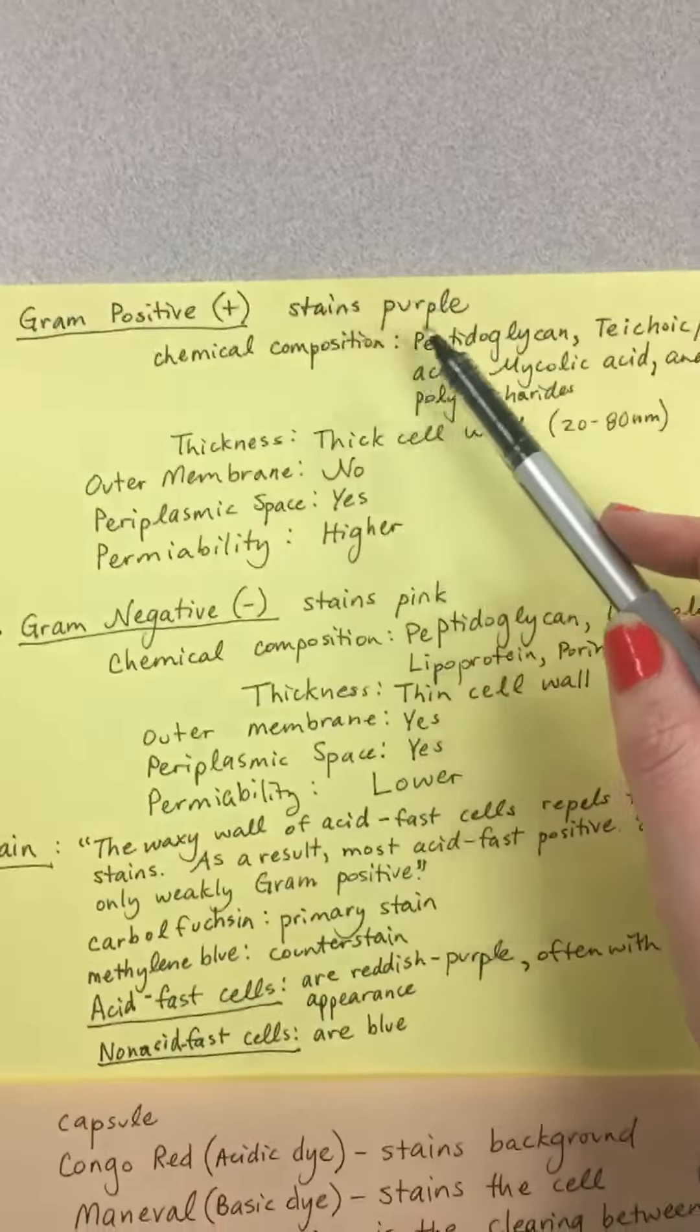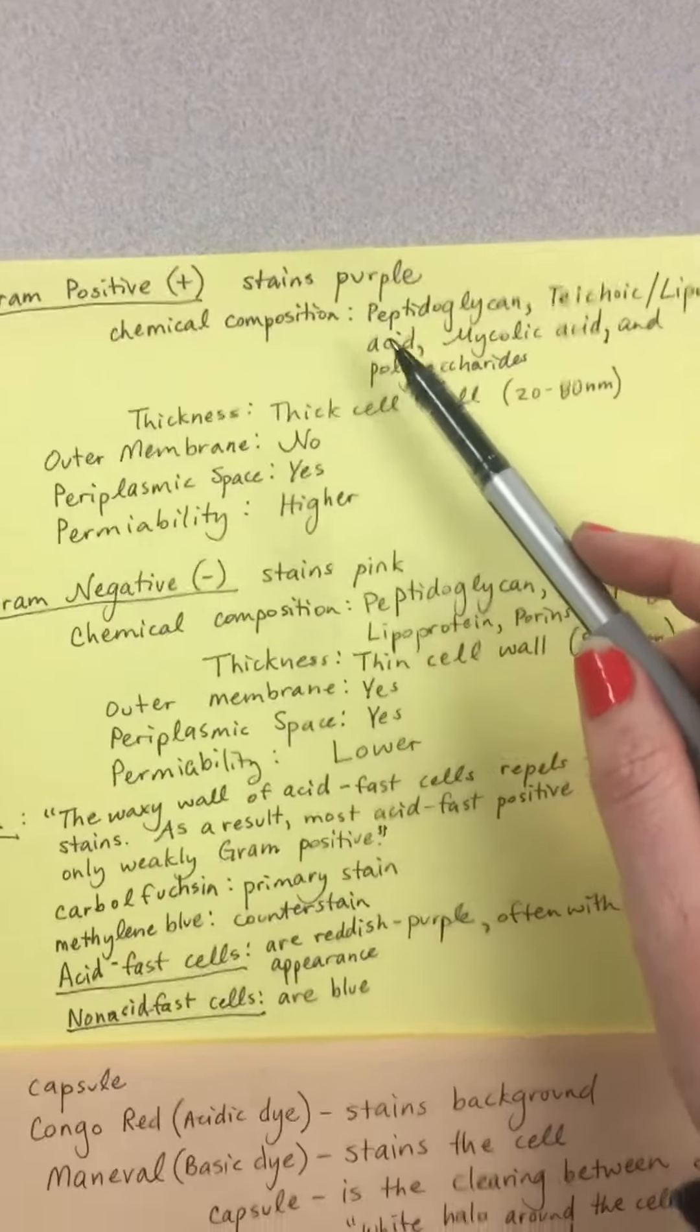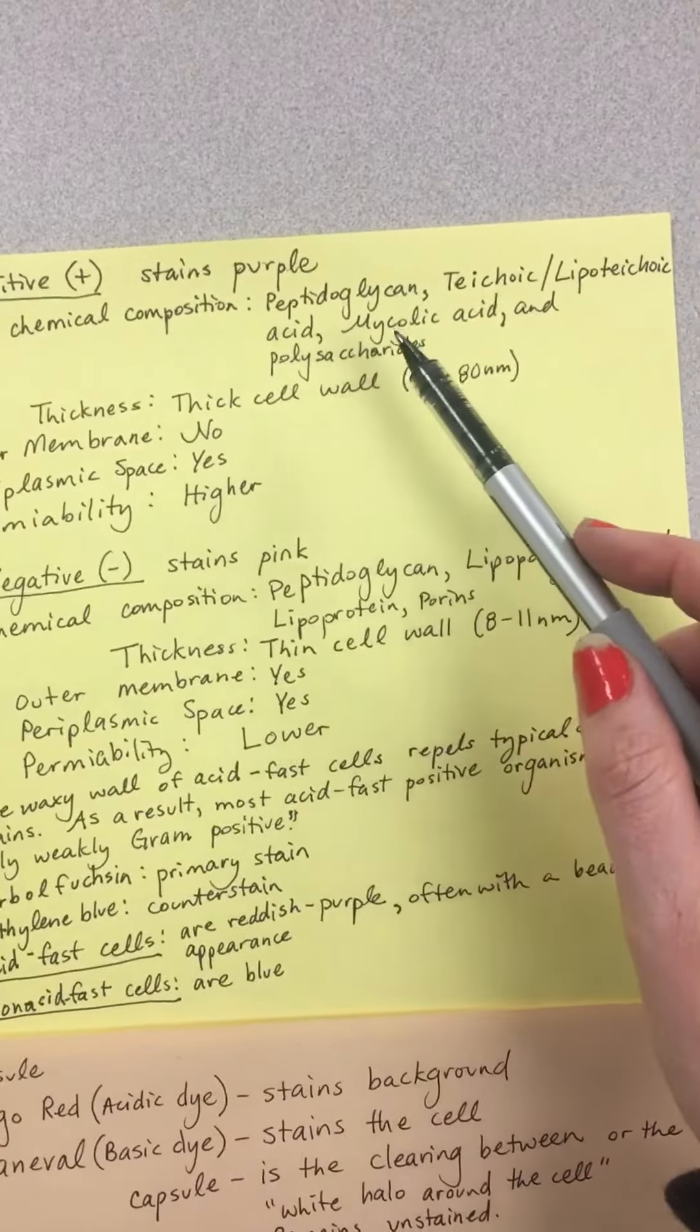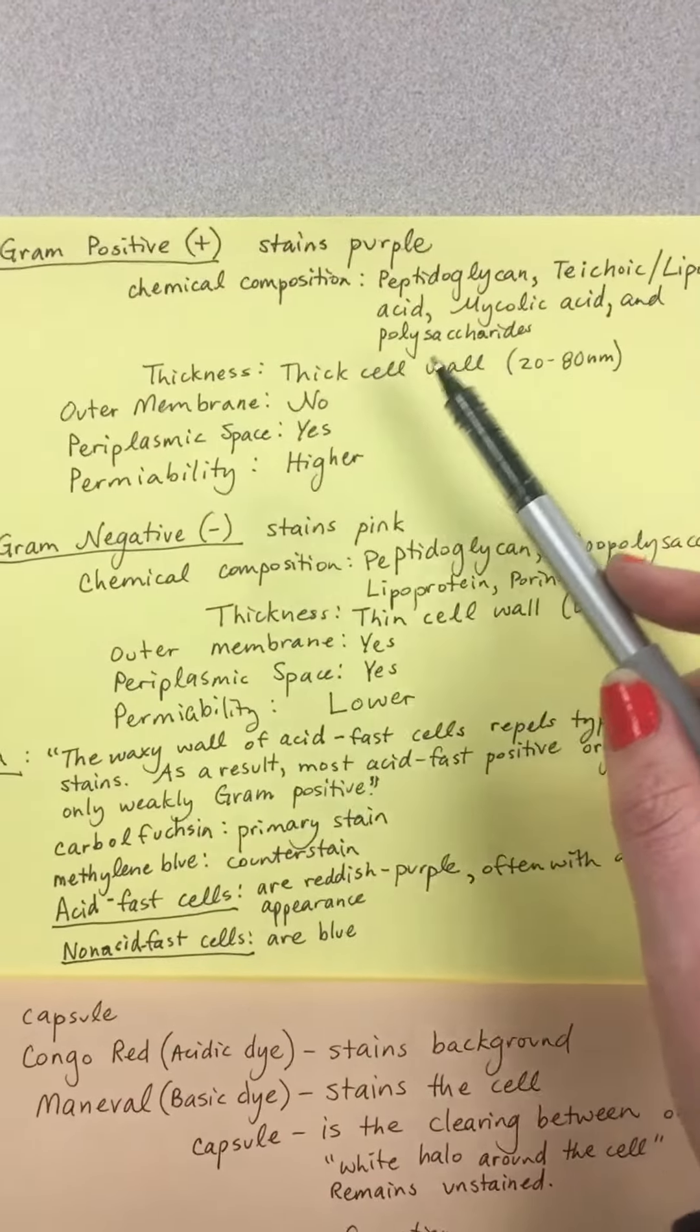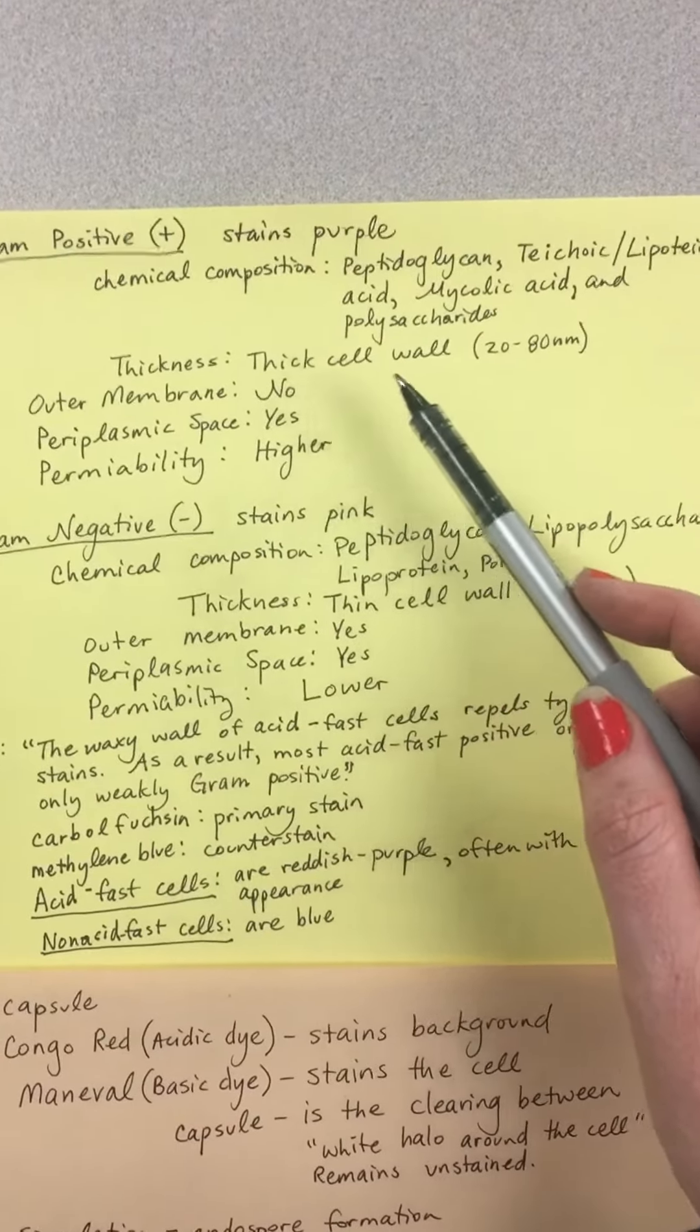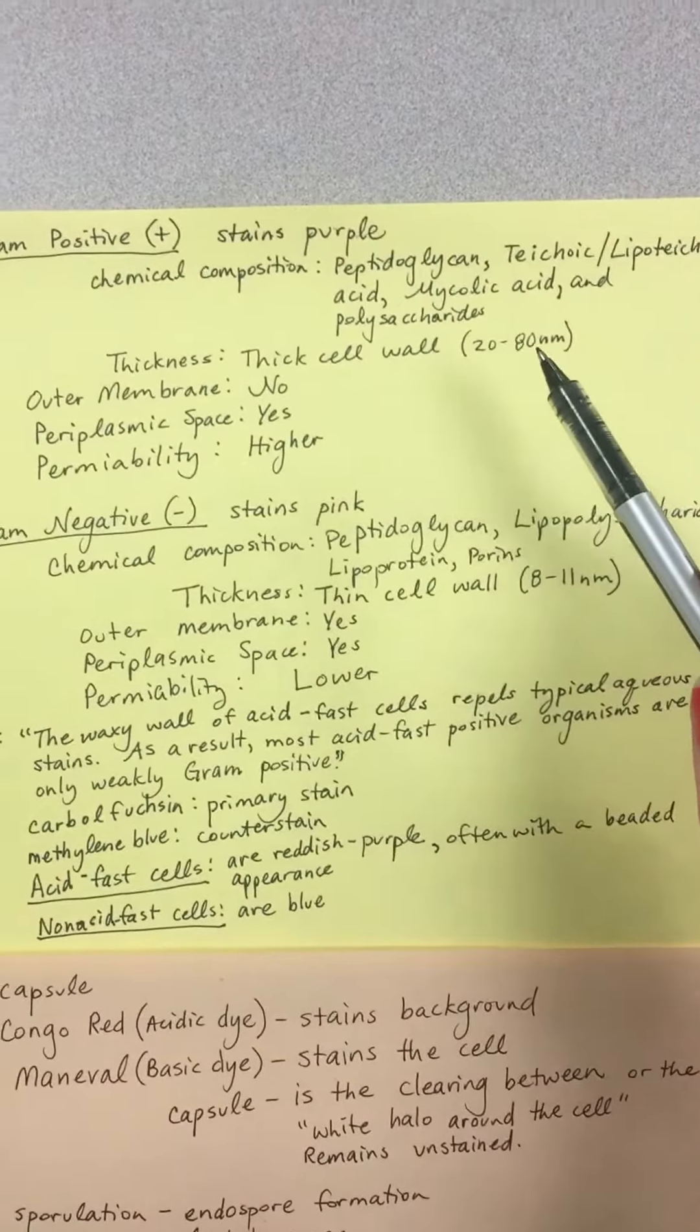For your gram stain, gram-positive organisms will stain purple. You have a chemical composition of peptidoglycan, techoic and lipotechoic acid, mycolic acid, and polysaccharides. The thickness of the gram-positive cell wall is very thick, from 20 to 80 nanometers.